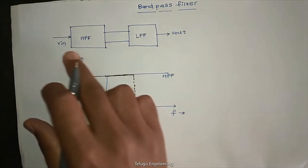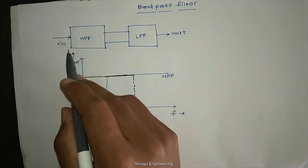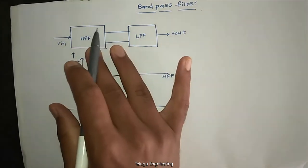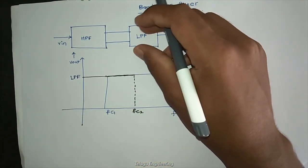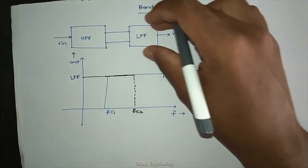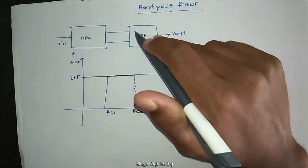So it's very simple. We use a high pass filter first. We will get the voltage at the output, and that output is again supplied to a low pass filter.